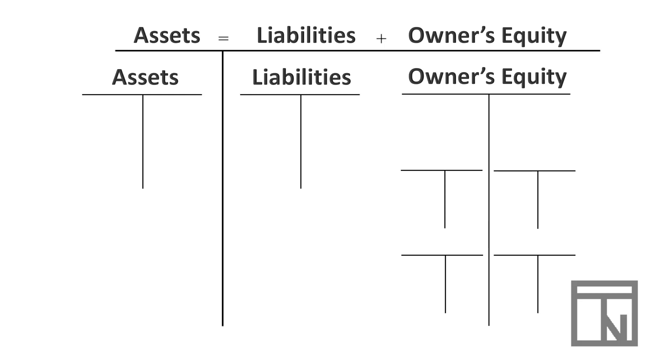Assets are everything that we own. Liabilities are the things that we owe, and owner's equity are those things that belong to the owners.